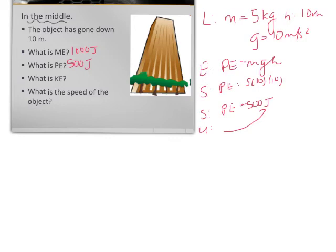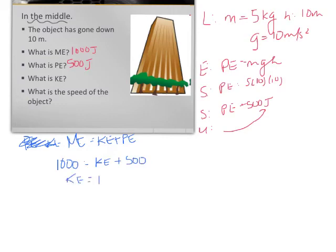To answer the next question, what is KE? We know that ME is equal to KE plus PE. Our total energy is always equal to the addition of the two other energies. So, we know 1,000 is equal to KE plus 500, or KE equals 1,000 minus 500, which is 500 joules.